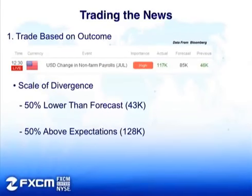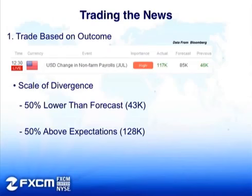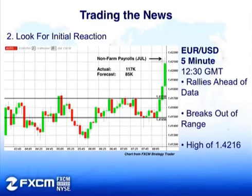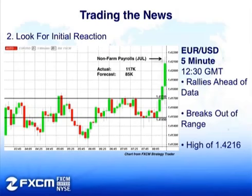We'll take a look at what happened for non-farm payrolls for the month of July. We actually saw a better than expected print - we saw that declining trend where non-farm payrolls missed market expectations, but now we're seeing it come out better than expected. Looking at our scale of divergence - 50% lower would be 43K - but we saw a better than expected print at 128K, which was fairly positive. From this data we would look for a bullish U.S. dollar reaction. Getting back to the 12:30 GMT timeframe, we see non-farm payrolls release come out, and we actually saw the Eurodollar rallying even ahead before the data came out - a high of 1.4216. We're out of the market, waiting to see whether we're going to see the bullish U.S. dollar reaction we're expecting.